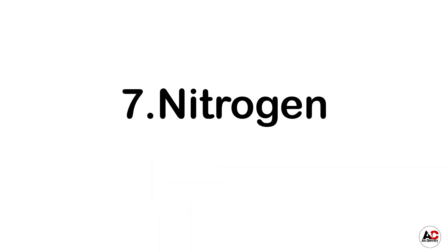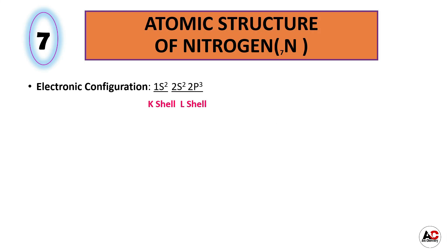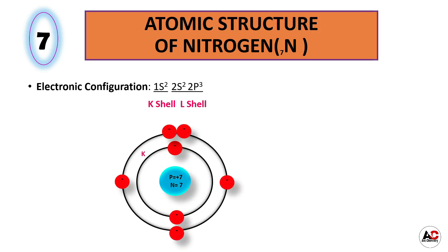Nitrogen. Atomic structure of nitrogen. The atomic number of nitrogen is 7, so it has 7 electrons. The electronic configuration of nitrogen is 1s2, 2s2, 2p3. According to this electronic configuration, the atomic structure of nitrogen will be like this. This structure shows it has 7 protons and 7 neutrons inside the nucleus and 7 electrons around the nucleus: 2 are in the K shell and 5 are in the L shell.